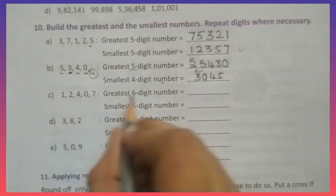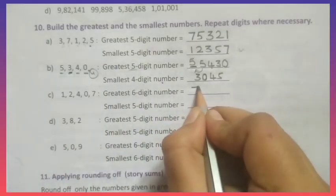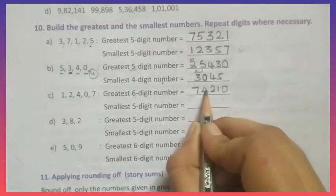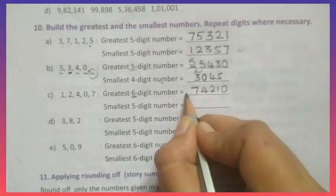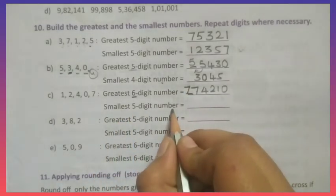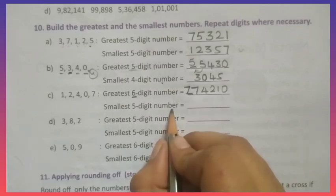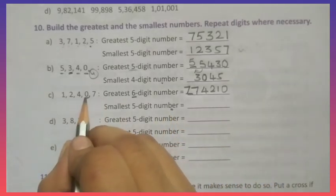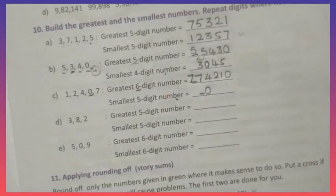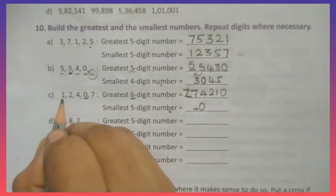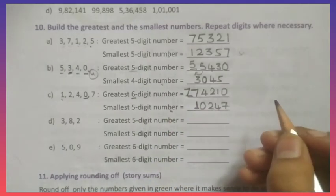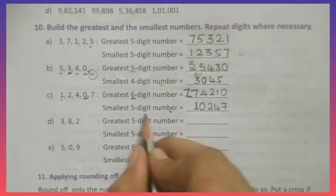Now look at this one. Greatest number — big to small: 7, 4, 2, 1, 0. That gives 5 digits, but we need 6. So repeat the greatest digit, 7. Greatest 6-digit number: 7,74,210. For the smallest 5-digit number, arrange small to big: 0 comes first but we should not write 0 first, so write 1 first: 1, 0, 2, 4, 7. This gives the smallest 5-digit number: 10,247.